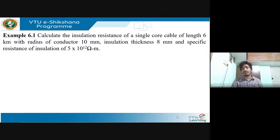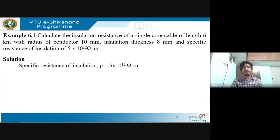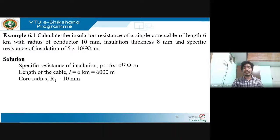The first problem is to solve for insulation resistance using the expression we derived. The question asks you to calculate the insulation resistance of a single core cable of length 6 kilometers, with conductor radius 10 mm, insulation thickness 8 mm, and specific resistance of insulation 5 × 10¹² ohm-meters. The specific resistance ρ = 5 × 10¹² ohm-meters, and length L = 6 km = 6000 meters.